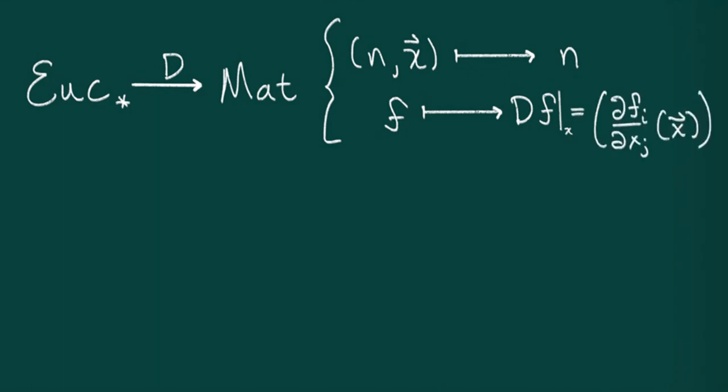Since f has multiple inputs and outputs, the derivative will be an n by m matrix. Its ijth entry will be the partial derivative of the ith component of f in the jth direction evaluated at x. How should it behave on a composition?